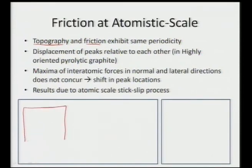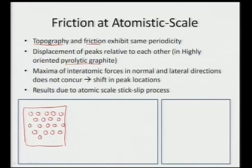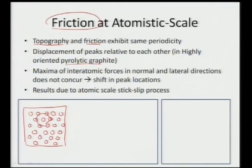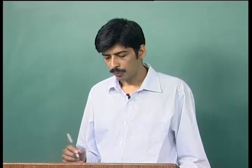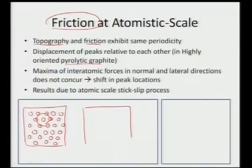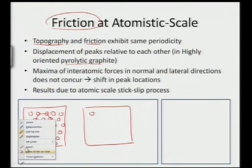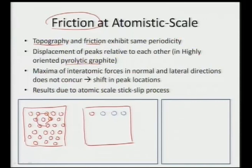Learning about friction at atomistic scale, we can utilize two techniques: topography or frictional contribution. Topography is scanning the surface to find the local arrangement of atoms. For a highly oriented pyrolytic graphite (HOPG), we will see a regular hexagonal structure — highly regular pyrolytic carbon arrangement. For frictional forces, scanning the same surface with a very fine tip that can capture atomic contributions will reveal the same periodicity as the topographic scan.